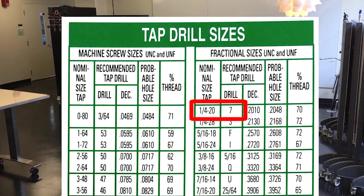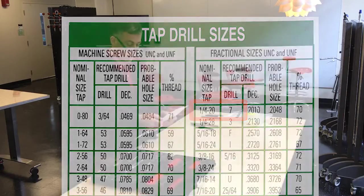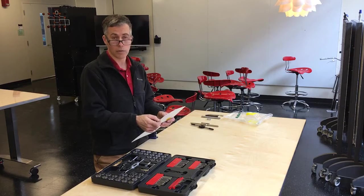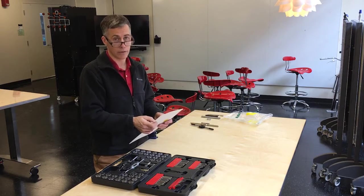So again, I'm going to do quarter-twenty. It's going to be a number-seven drill size. What that means is that I'm basically making a hole. I want the quarter-twenty thread size, which is nominally .25 inches.